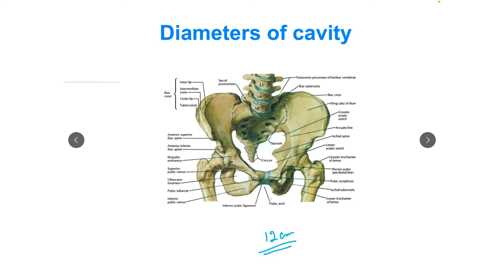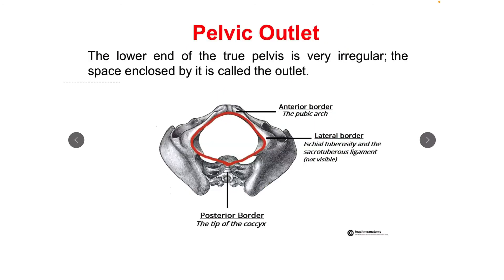Pelvic outlet जो होता है यह pelvis का lower end होता है, और यह बहुत ही irregular shape का होता है। जब bony portions को mark किया जाए तो एक irregular shape बनती है और एक space enclosed होती है जिसको pelvic outlet बोलते हैं। Anteriorly होता है pubic arch, laterally होता है ischial tuberosity, and posteriorly होता है tip of coccyx। यह usually diamond-shaped होती है।